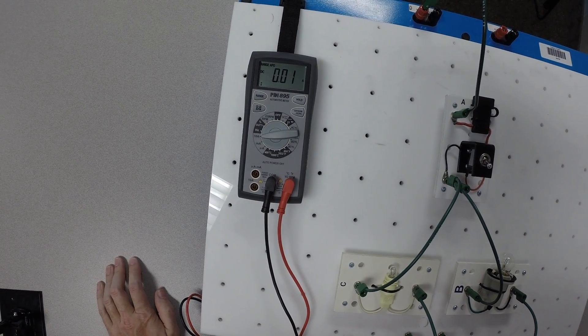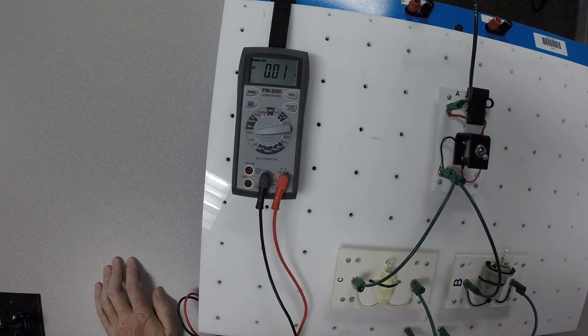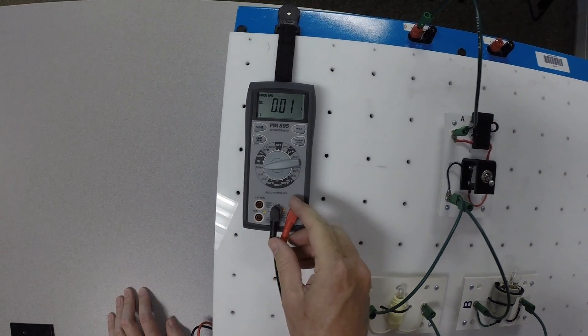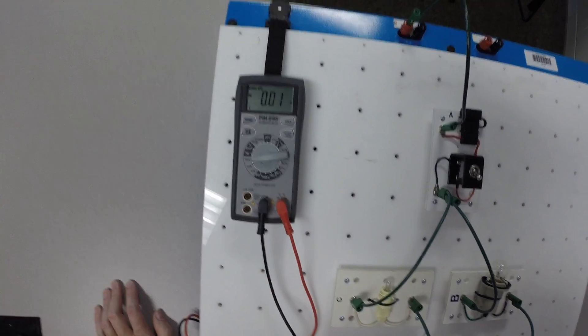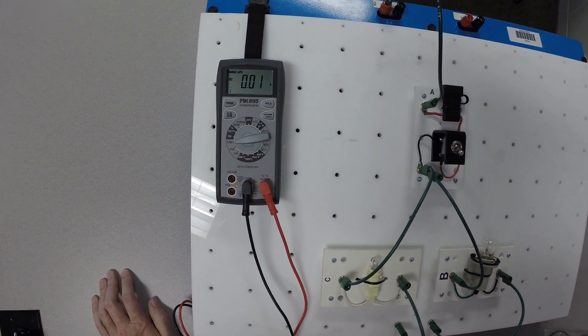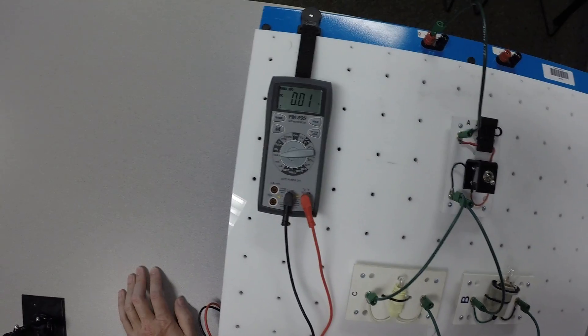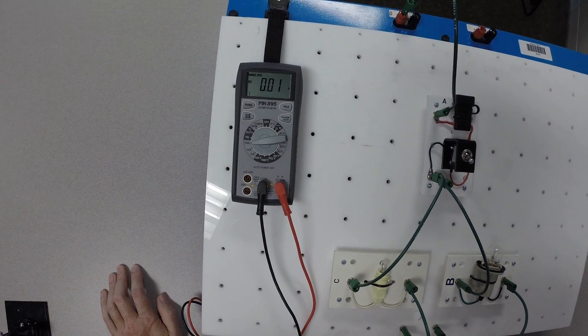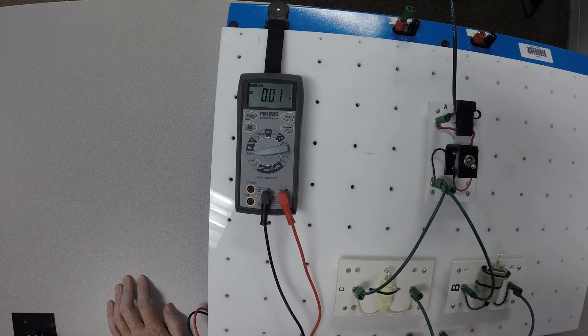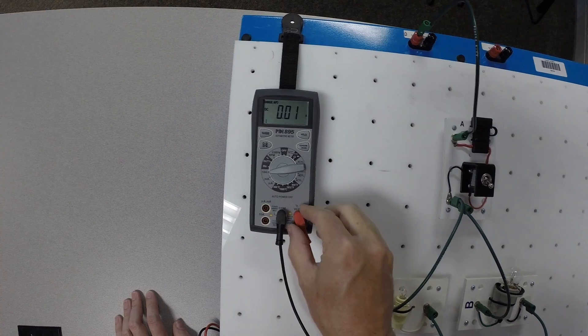We're not going to worry about measuring anything in milliamps, because generally speaking, when you're using an ammeter like this for this kind of simple practice, the 10 amp scale is going to be just fine. If we start measuring things using milliamps, we're likely to blow a fuse in the meter. So we have our meter turned to the 10 amp scale.